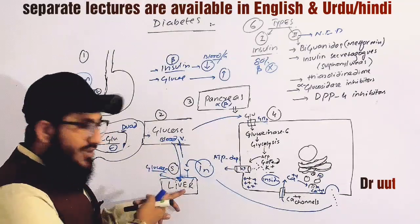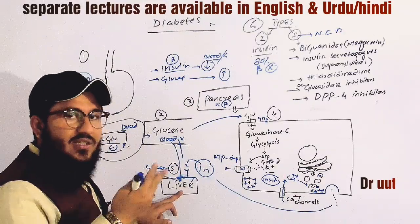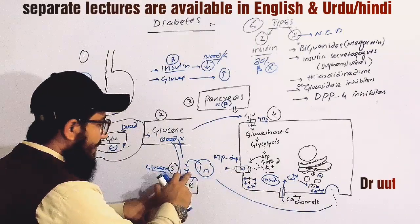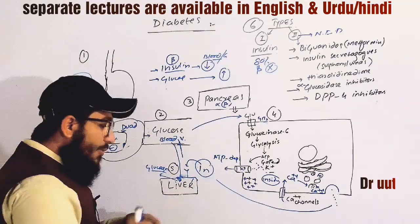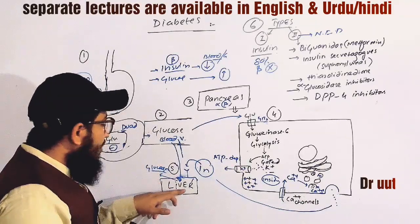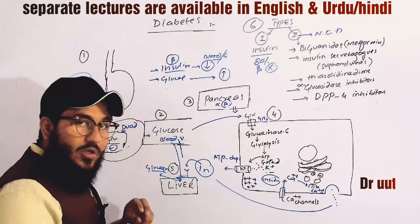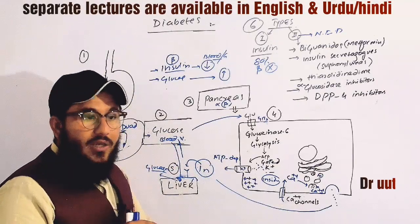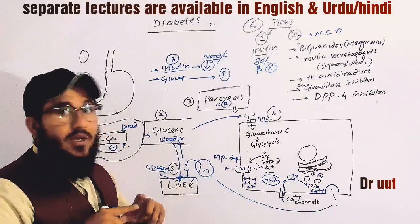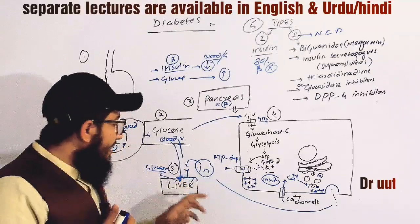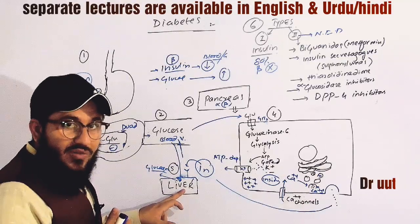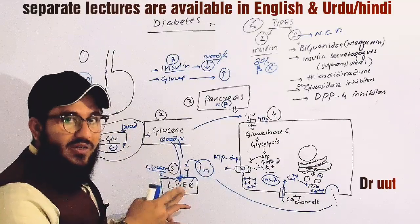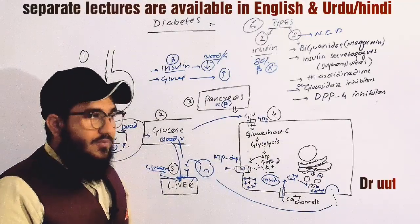When glucose reaches tissues such as liver, skeletal muscle, or adipose tissue, insulin stimulates the insulin receptors and glucose moves from the blood vessel to the liver, where it is converted to glycogen. As time passes and glucose concentration falls, the body needs glucose again. For that, glucagon is used, which causes glycogenolysis, converting that stored glycogen back into glucose to provide energy to other parts of the body.